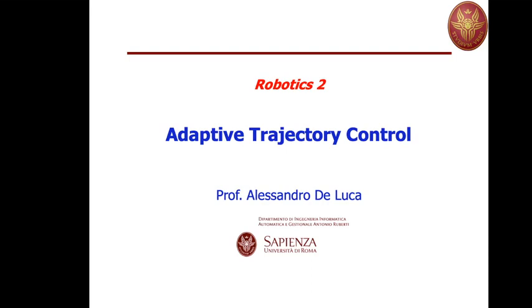In this lecture, I will present the last of the series of controllers designed in the joint space aimed at tracking reference trajectory. In particular, we will consider the case of adaptation. We will provide the motivation for the need of adaptation, introduce some ideas from the research literature, until finding the most standard and classical direct adaptive controller that achieves global asymptotic tracking.